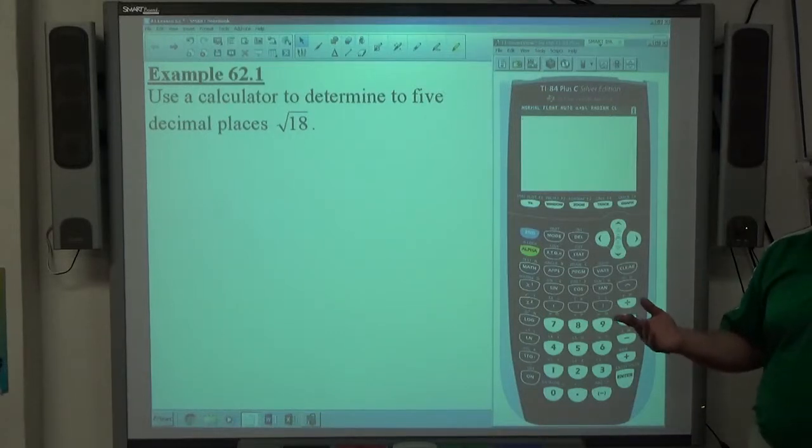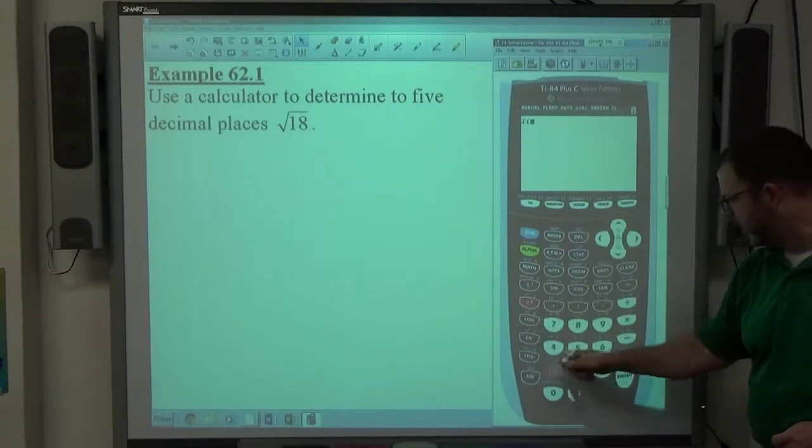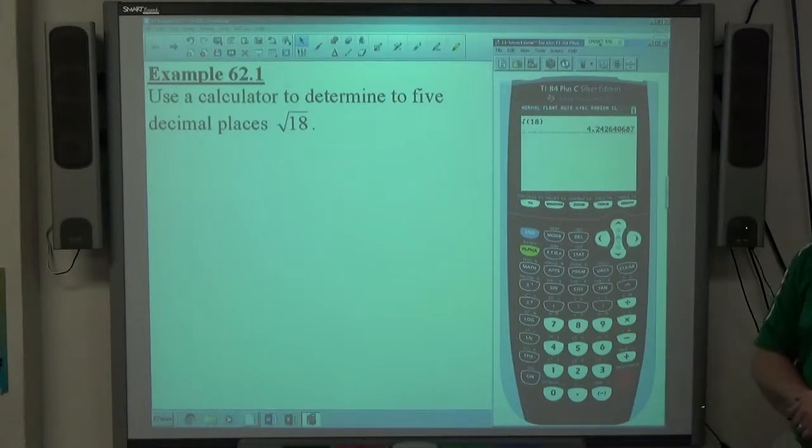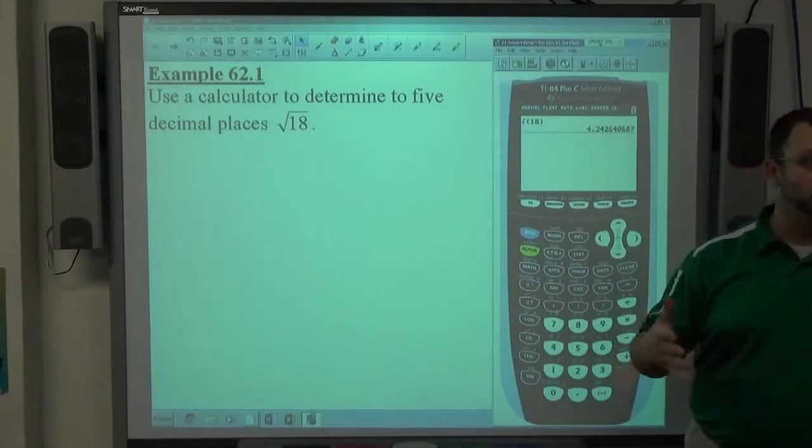I don't know what kind of calculator you have, but most of them have a square root button, so you type in square root of 18. I put it in parentheses just because I like to finish things out. Some calculators, you type in 18 first, then hit the square root button, depending on your brand.